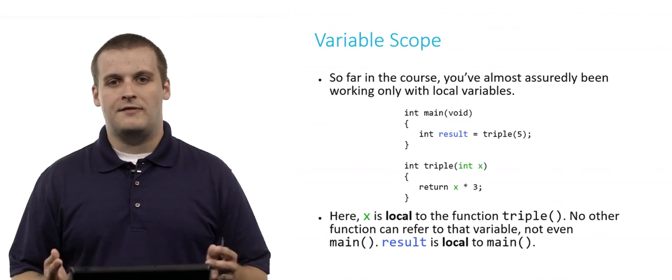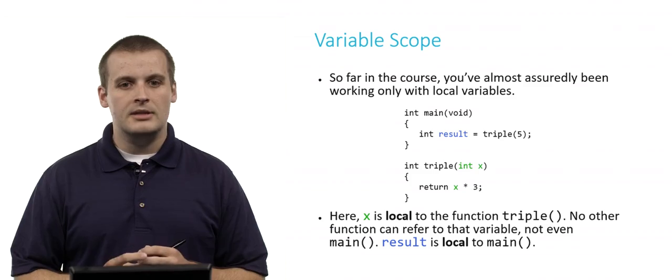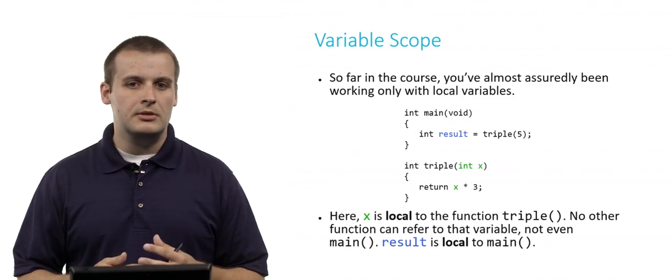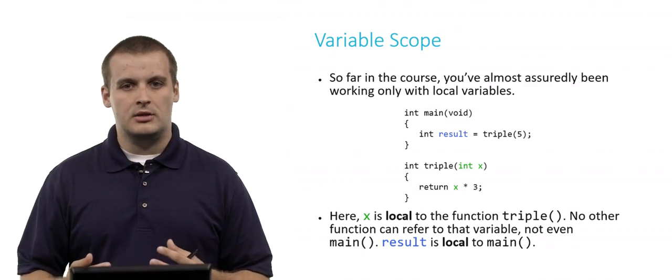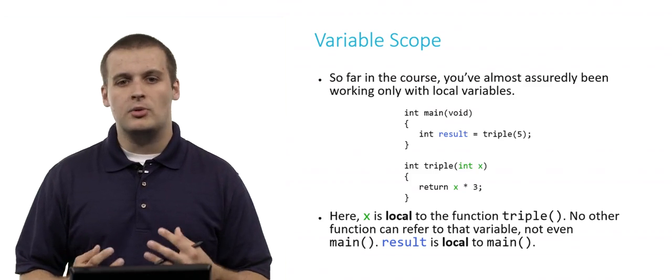No other function, if we had additional functions in here, could refer to x. Similarly, result, which I've colored blue, is local only to main. Only main knows what the variable result is. Triple cannot use it.